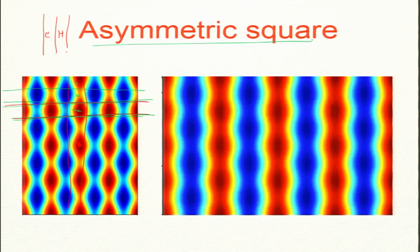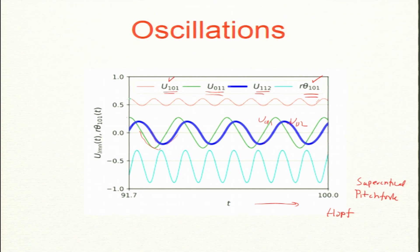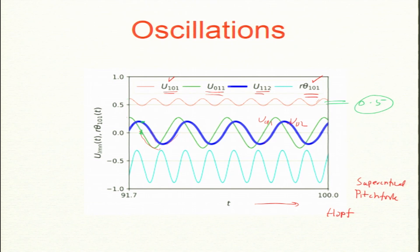It is called asymmetric because one roll is strong and the other is weak. The x-z roll is always dominant and never loses its character. The other roll (y-z, mode 0,1,1) comes and goes, oscillating around 0, while mode 1,0,1 oscillates around 0.5. So 1,0,1 is the dominant roll and 0,1,1 comes and goes. When 0,1,1 is zero, we have only the x-z roll.